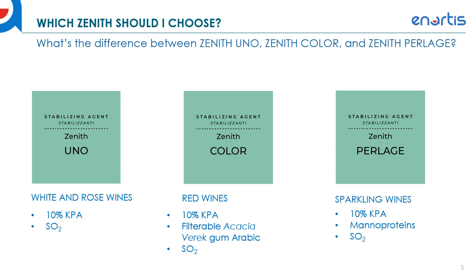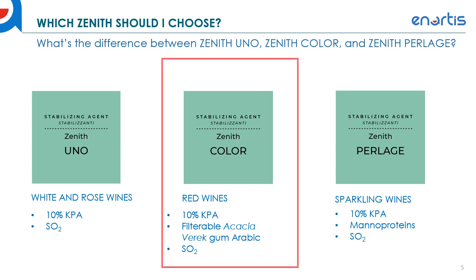For the purposes of this presentation I'm going to be highlighting Zenith Color. Zenith Uno can also be used in red wines that are tartrate unstable; however, we do recommend using Zenith Color for red wines because it stabilizes color over time, whereas Zenith Uno doesn't have color stabilization impact.